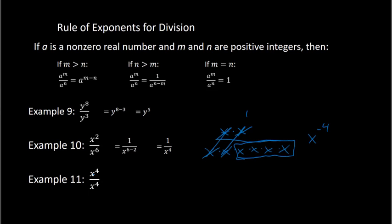For example 11, if you have the same exponent on top and bottom, the answer is just 1, because anything divided by itself is 1. Another way to think through that: subtracting the exponents 4 minus 4 gives 0, so x to the 0 power equals 1, because anything to the 0 power is 1.